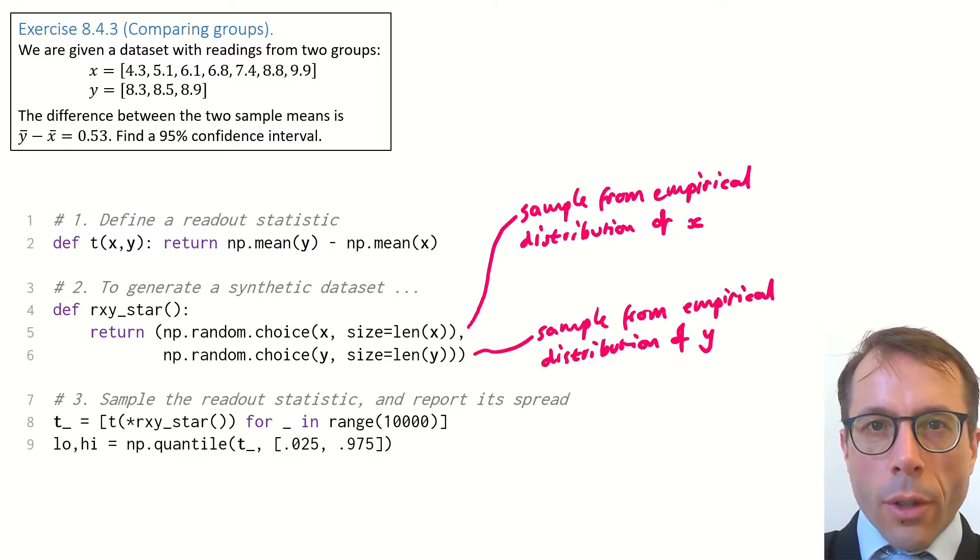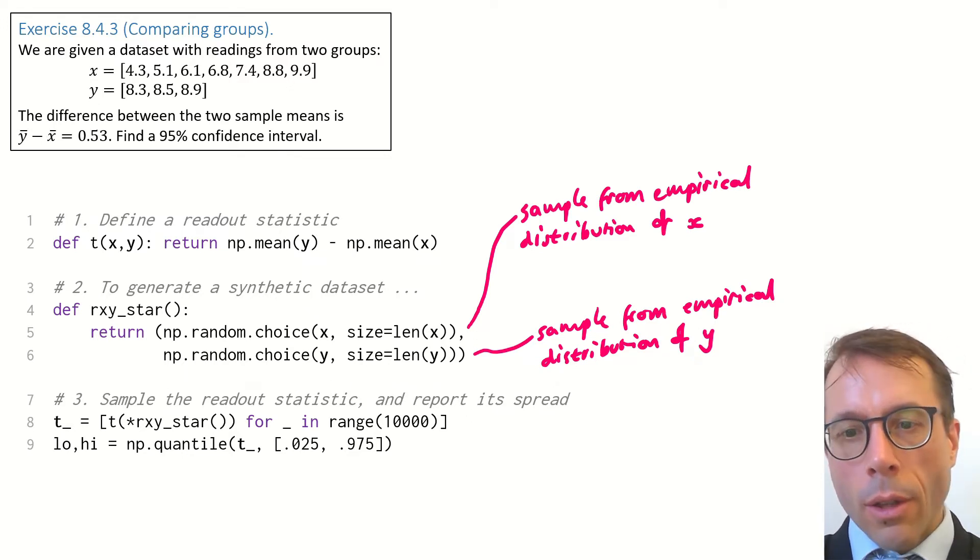What this code does to create a synthetic copy of the X data set is it just samples from the empirical distribution of X. This is the best possible fitted distribution for X, and likewise from Y.